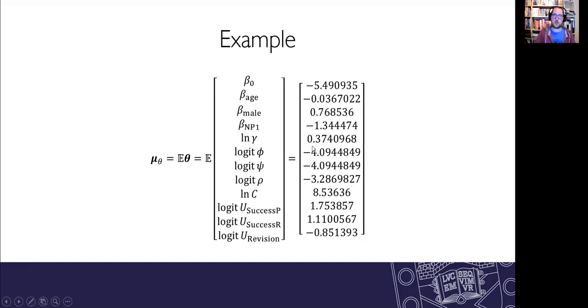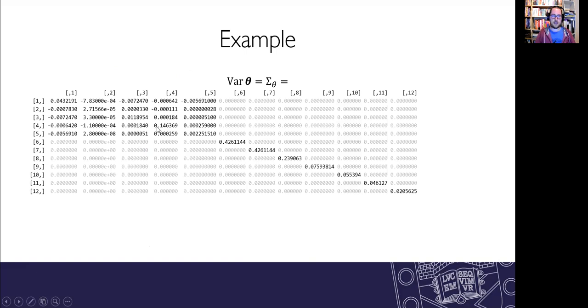And so our parameter vector which has 12 parameters here are the expected values for those just for reference and here's the variance covariance matrix. So you'll see the first five parameters we have a full covariance structure which came from the survival analysis. The other parameters are assumed to be independent of each other which is why you have zeros in the off diagonals for them.